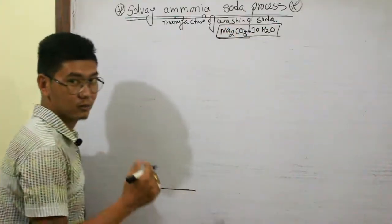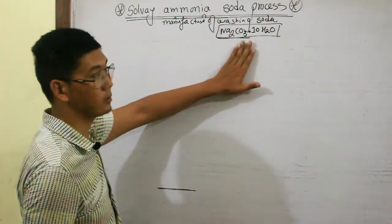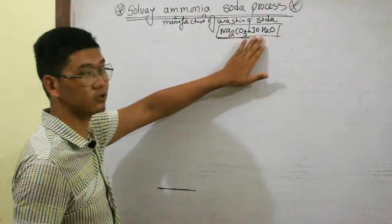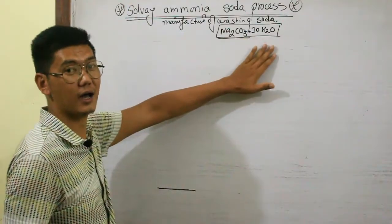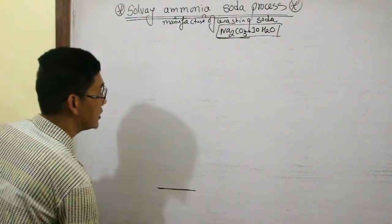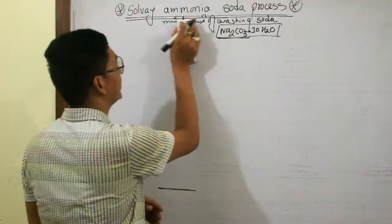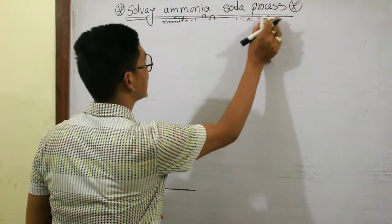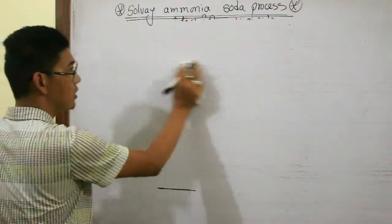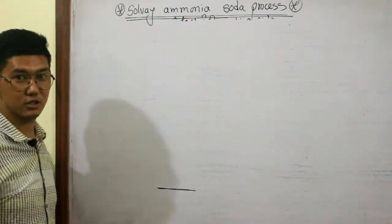This is the hydrated form of washing soda. Decahydrated sodium carbonate is known as washing soda. This is a very important extraction using the Solvay ammonia soda process, and this process is used for three things, dear students.